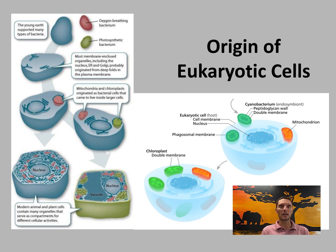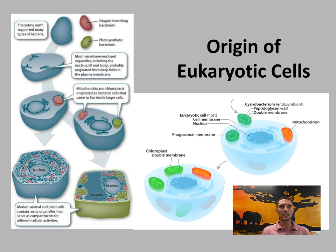Mitochondria and chloroplasts divide and replicate on their own. Other organelles probably formed by infolding of the external membrane, providing selective advantages that led to the development of additional organelles. Endosymbiosis is the primary explanation for how eukaryotic cells developed over time.